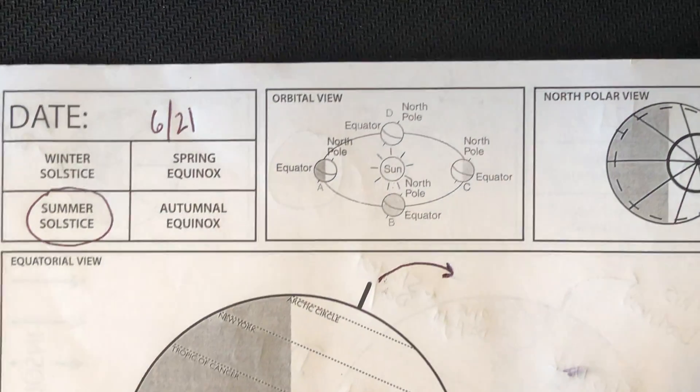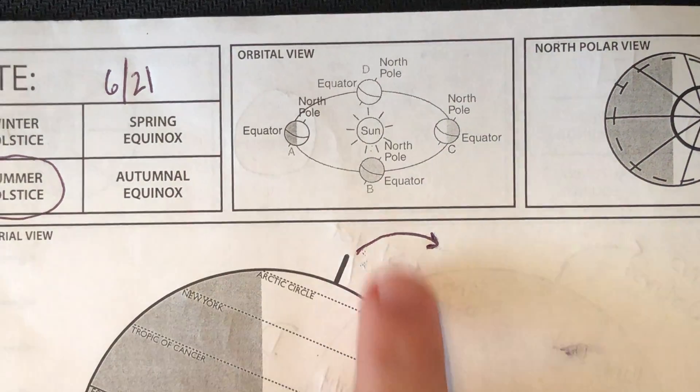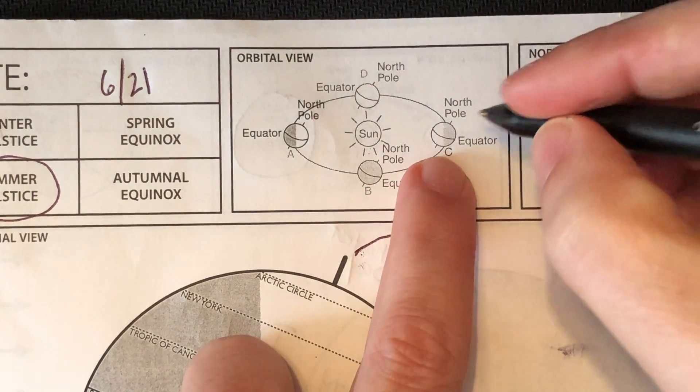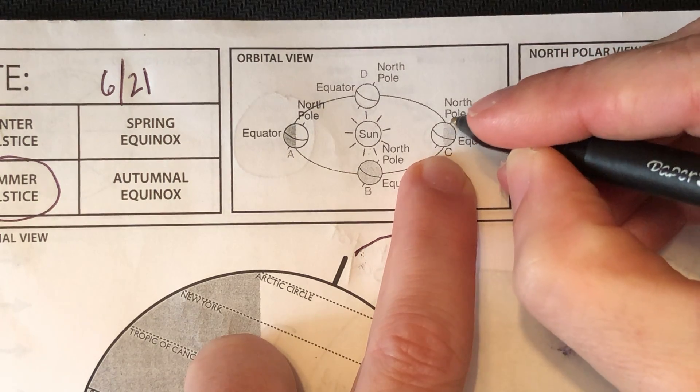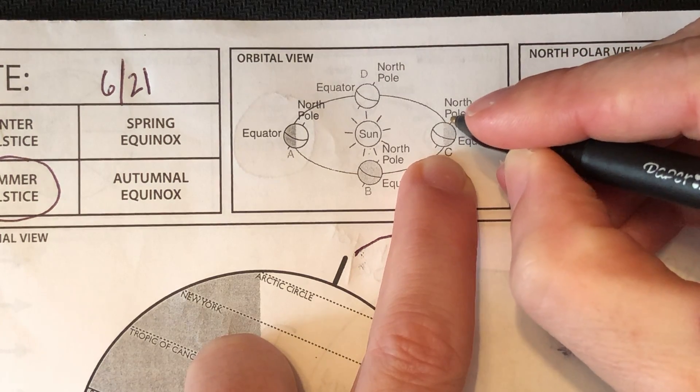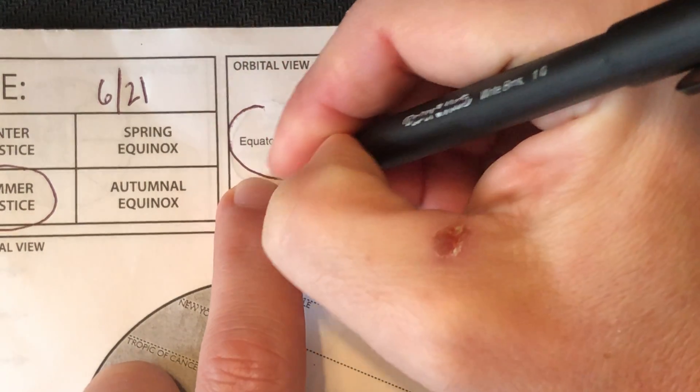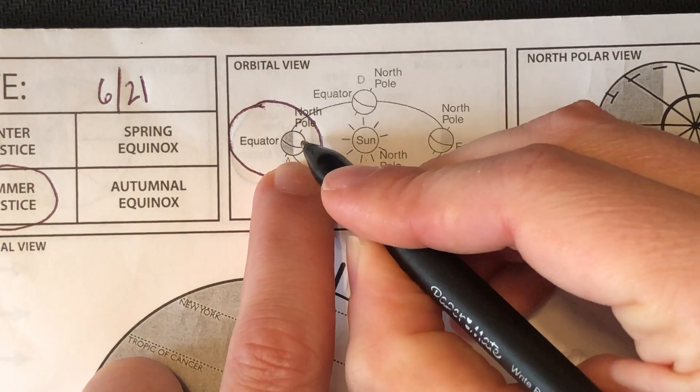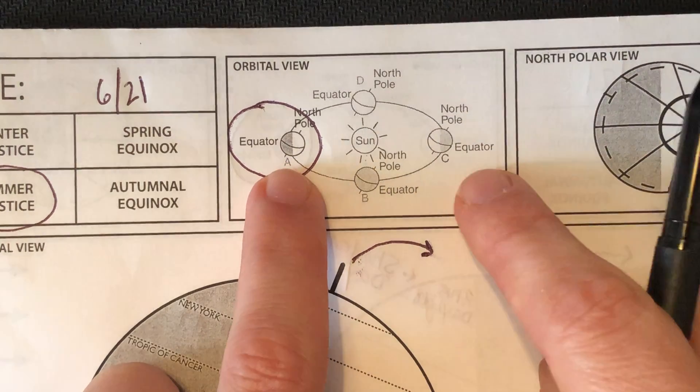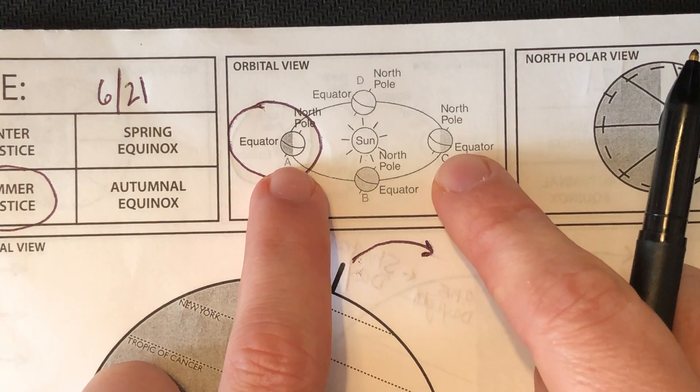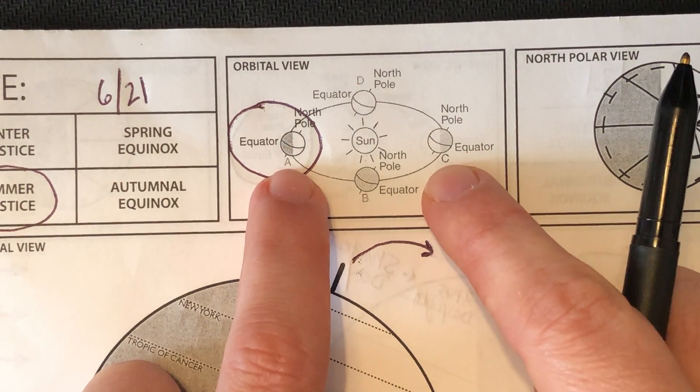If you take a look here, I have a couple different viewpoints. Let me start out with the orbital view. In my previous video, winter was on the right side because the northern axis is tilted away from the sun. Summertime is going to be right here because my northern axis is tilted towards the sun. You don't want to say that Earth is tilted towards or away because the southern hemisphere is going to be the exact opposite.